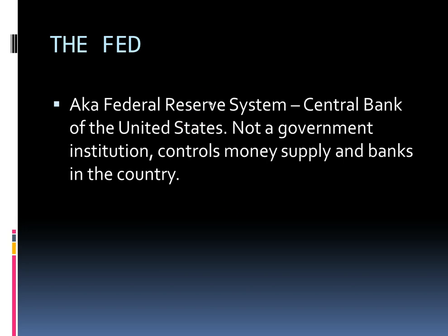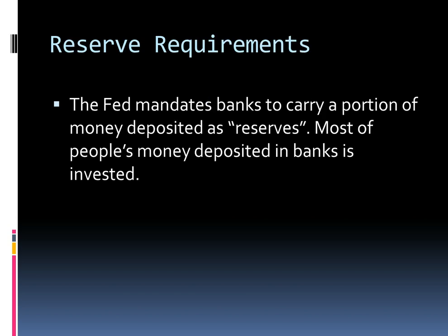America's money supply is controlled by an independent organization known as the Fed, or the Federal Reserve System. It's not part of the government — it's the central bank of the US, in charge of the money supply and controlling the other banks. The Federal Reserve mandates banks to carry a portion of deposited money as reserves. For example, if I deposit $100 into a bank, the bank has to carry a portion — say $10 — as reserve. This is known as the reserve requirement. With the rest of the money, the bank will invest it or give out loans, but I can always withdraw my money. The Fed uses reserve requirements as a way of controlling the money supply, and the reserve requirement has been at 10% for a while.